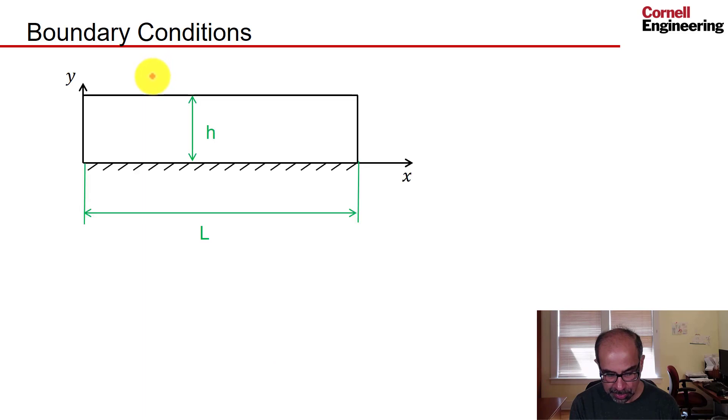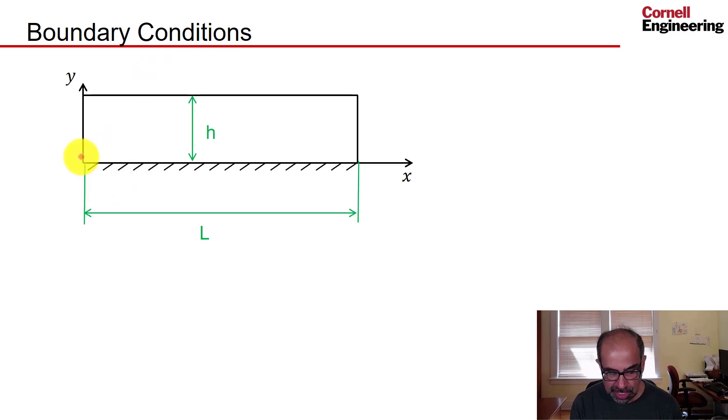Next let's think about the boundary conditions. For that we need to determine where we are going to put the outer boundaries. That's a determination we need to make for all external flows. Here's the plate, and I have selected my outer boundaries in this fashion. So my domain is a rectangle. I have flow coming in here and flow going out here.